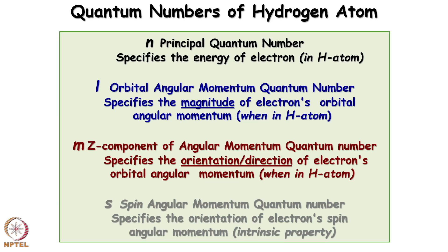Where n is the principal quantum number, specifying the energy level of electrons in the hydrogen atom; l is the orbital angular momentum quantum number, specifying the magnitude of the electron's orbital angular momentum in the hydrogen atom. Now there is a fourth quantum number — spin — which is the spin angular momentum quantum number specifying the orientation of the electron's spin angular momentum.